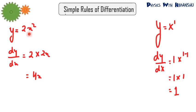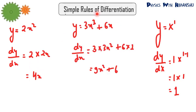Now, if y equals 2x squared — the constant 2 stays as is, and the differential of x squared is 2x — so the answer is 4x. Another example: if y equals 3x cubed plus 6x, then dy by dx equals 3 times 3x squared plus 6 times 1, giving 9x squared plus 6. When there is a constant multiplying a function, the constant stays, and you differentiate the function. When there is addition of two functions, you differentiate each separately and add.